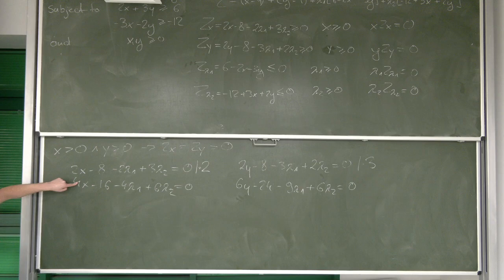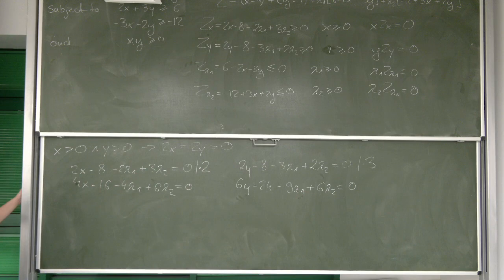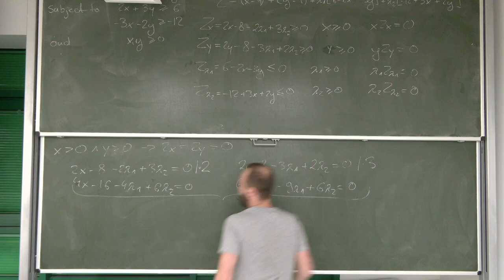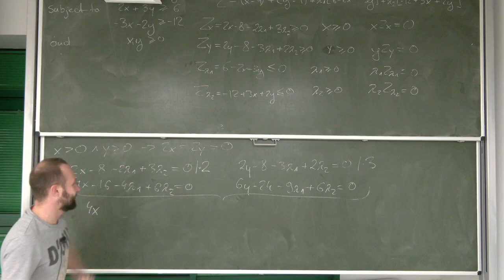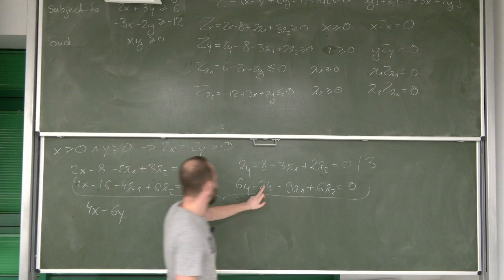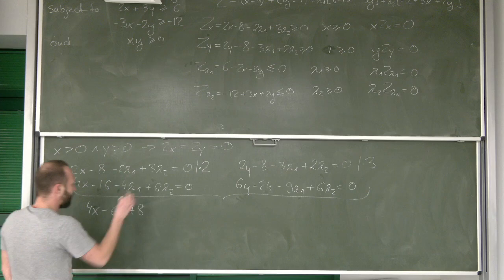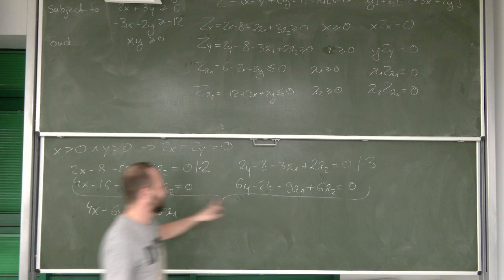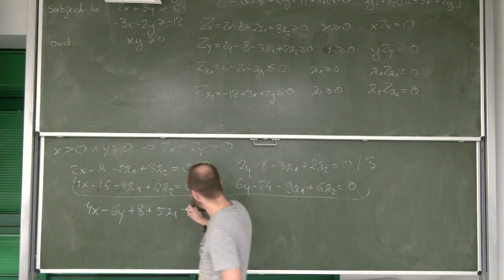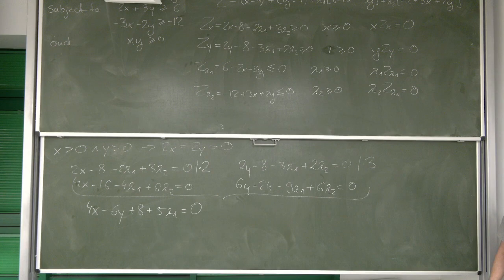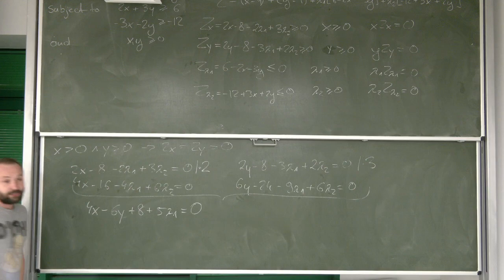And look, so what I can do is I can take this equation and subtract from it this equation. And let's see what I'm getting. I'm getting then 4x minus 6y negative 16 plus 24 gives us 8 and minus 4 lambda plus 9 lambda 1 gives us plus 5 lambda 1 and of course lambda 2 are cancelling each other out. Okay, but still we've got one equation only and it has 3 variables, which is very problematic.